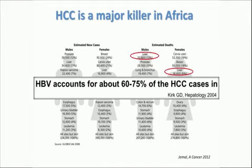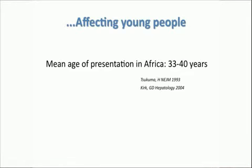Viral hepatitis B accounts for almost two-thirds of hepatocellular carcinoma cases in Africa. Definitively, viral hepatitis B is a huge issue, and it affects young people because the mean age of presentation in Africa is very low — 33 to 48 years according to different studies. So people die, and they die early in their life.